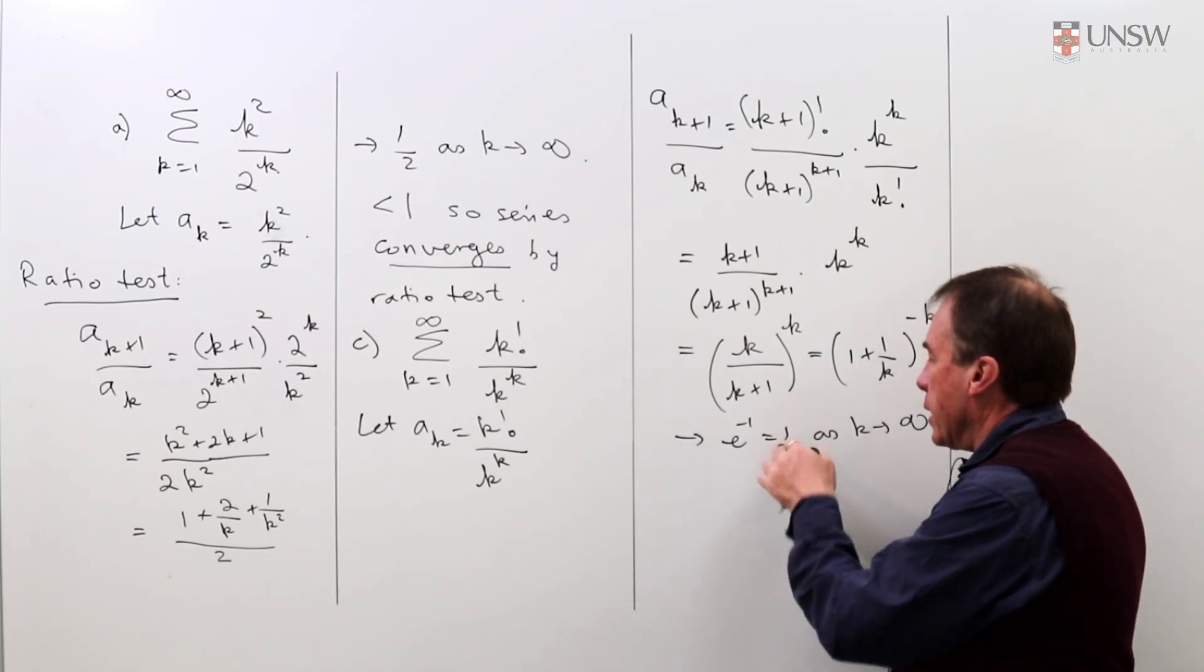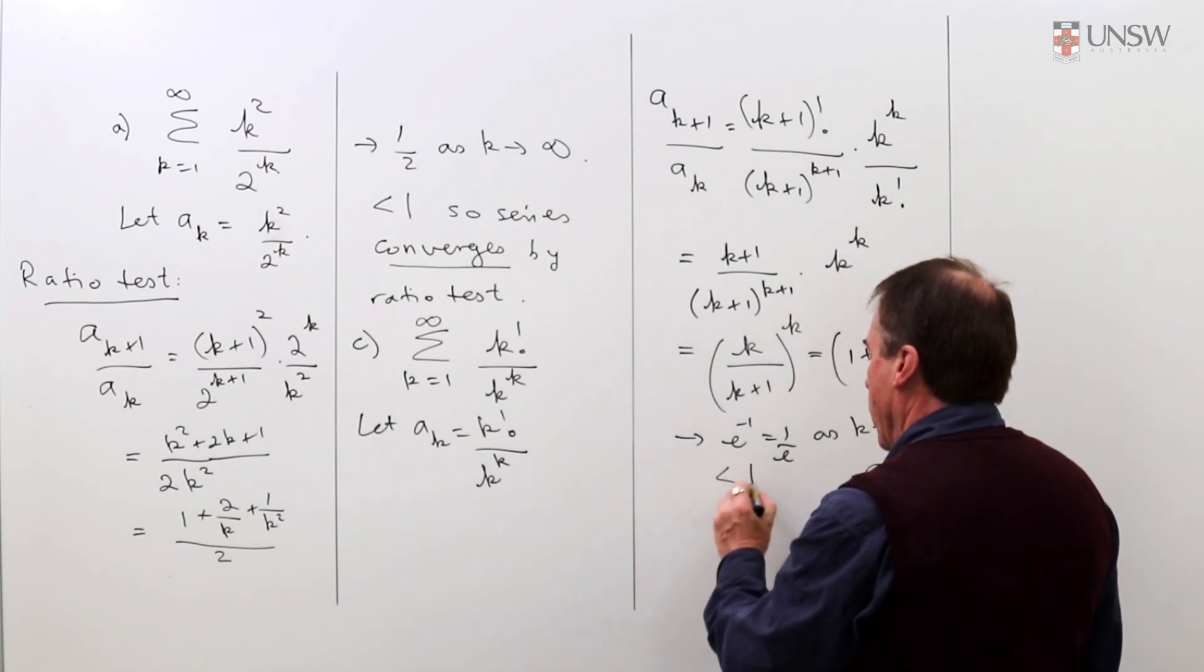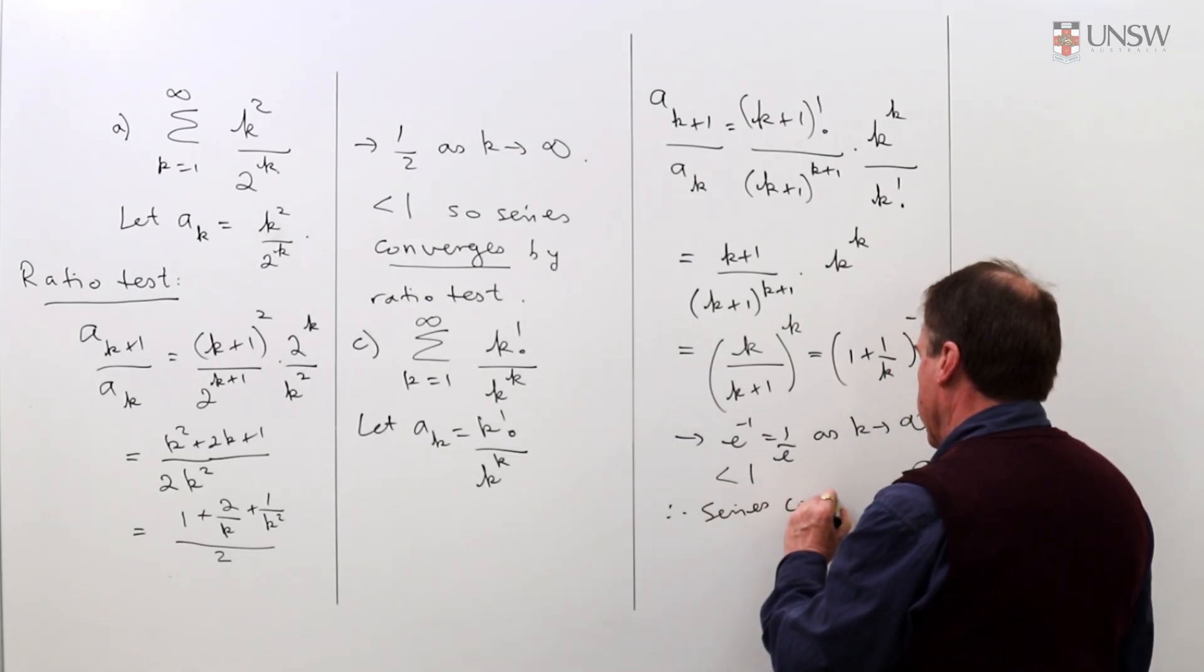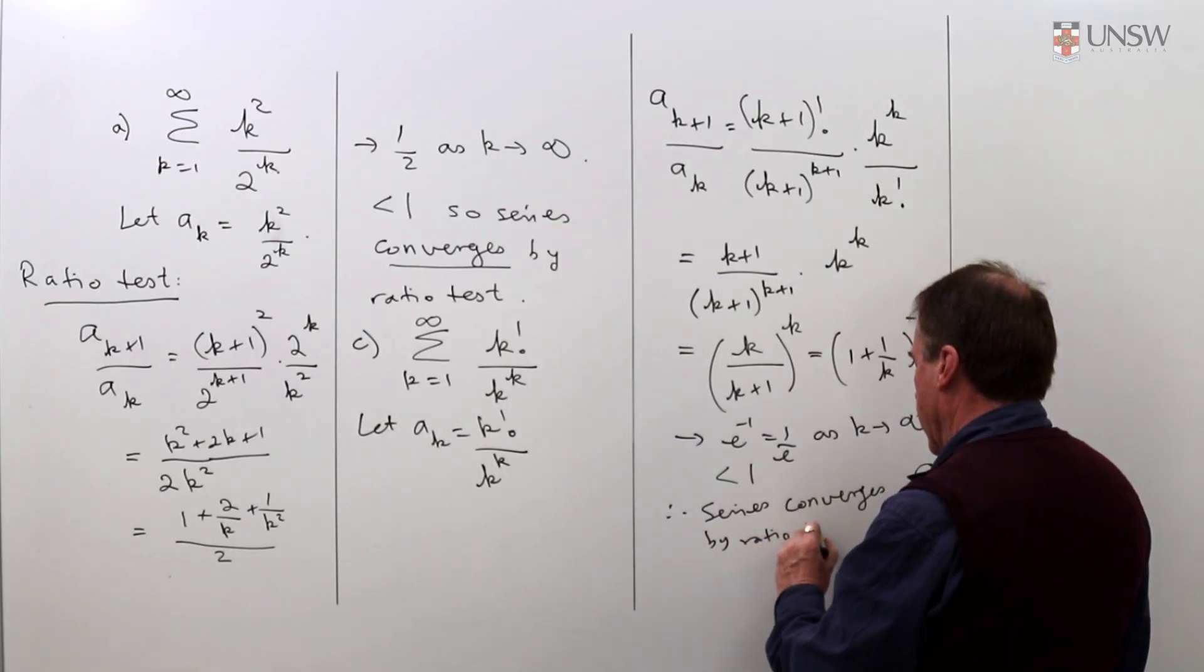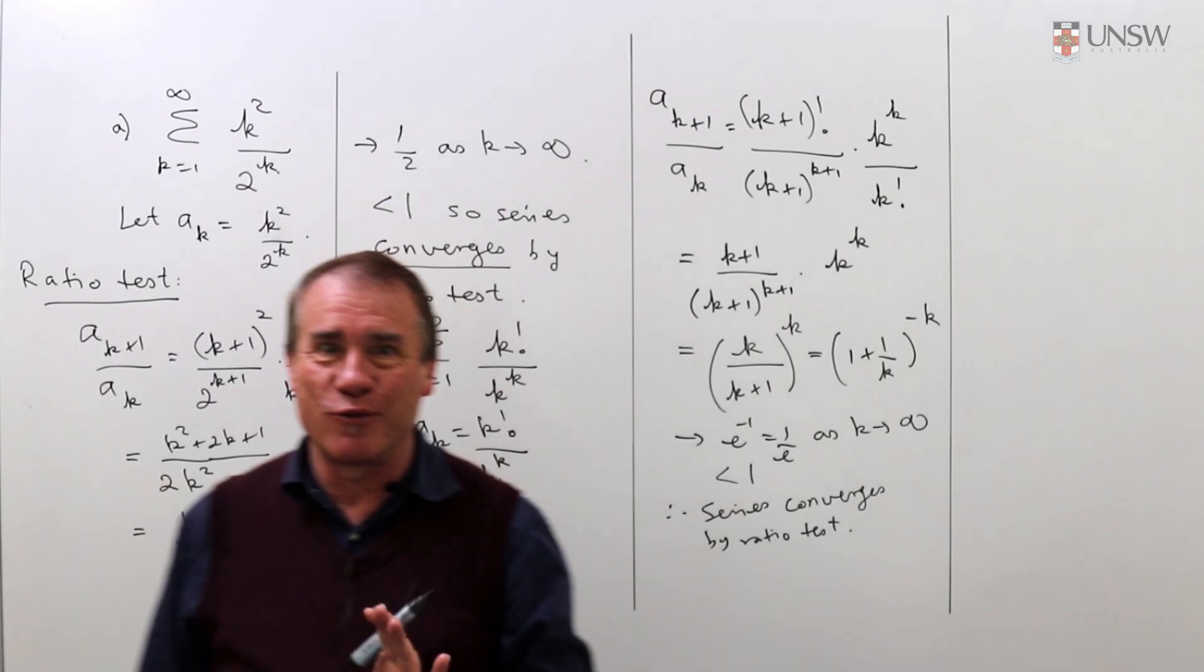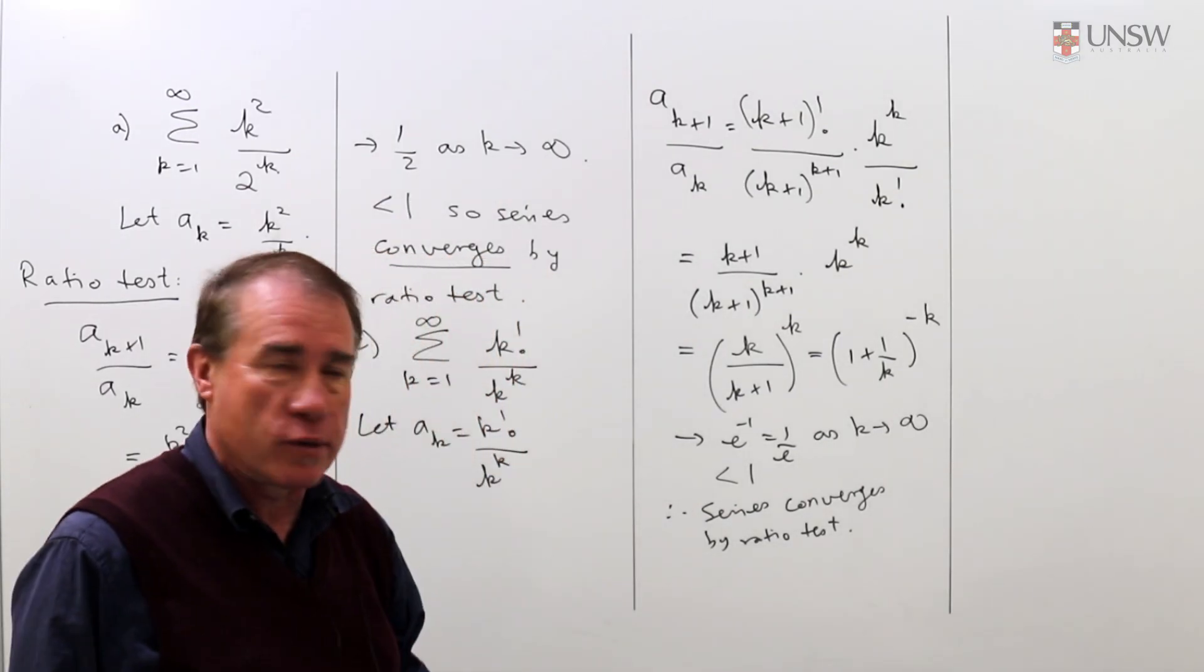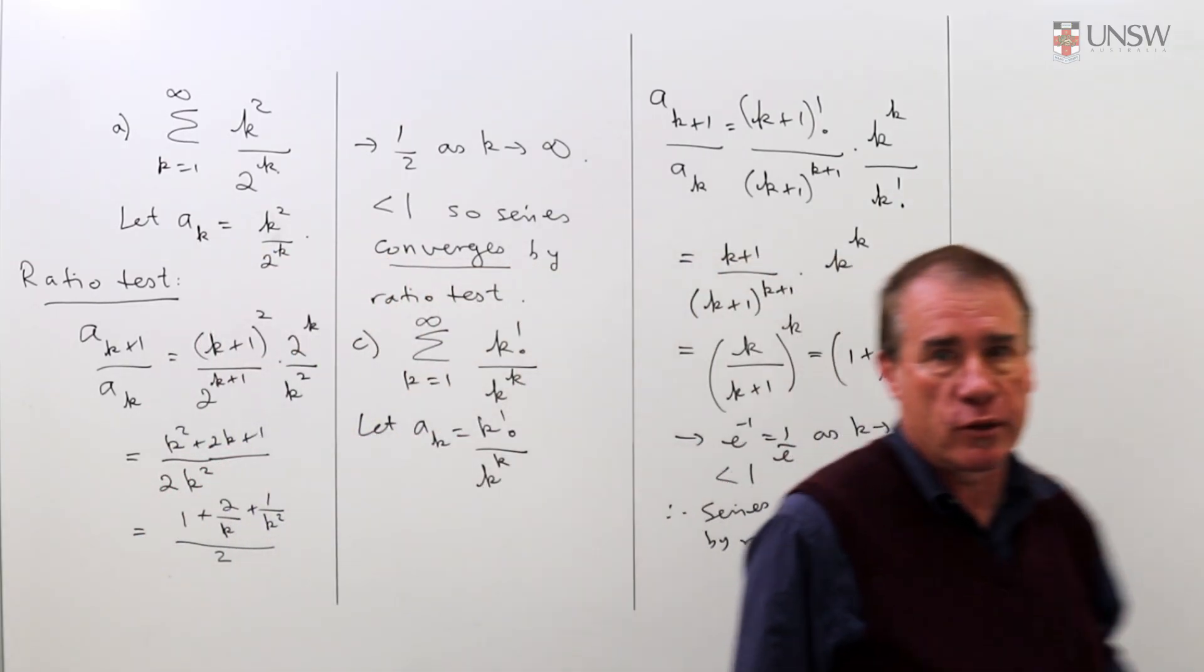How big is e? Well e is about 2.7 so 1 over e is going to be less than 1 and therefore the series converges by the ratio test. By the way, none of these tests tell us what the series converges to. That's a much more complicated problem. We're only interested in whether the series converges.